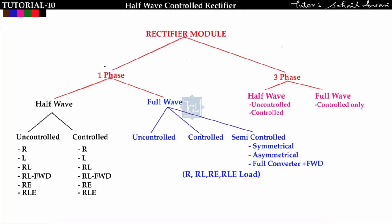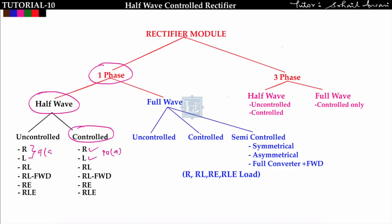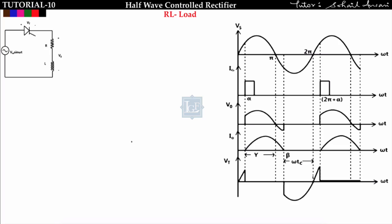In the previous lecture we covered single phase half wave controlled rectifier for R load and RL type of load — that was lecture 10A. Lecture 9A covered R and RL loads, 9B covered RL with freewheeling diode, and 9C covered RE and RLE type loads. In this lecture we will cover RL type of load and RL with freewheeling diode — lecture number 10B.